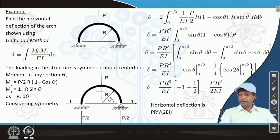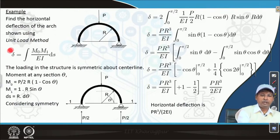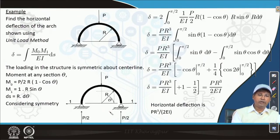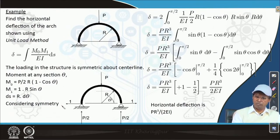The second example is of a different type: find the horizontal deflection of an arch using the unit load method. The arch is centrally loaded, so the loading is symmetric and the reactions are P/2 at the two ends. For the unit load method, we apply one unit load P₁ at the end that is expected to displace horizontally, while the other end is supported. It is not two unit loads — the concept is to apply one unit load.